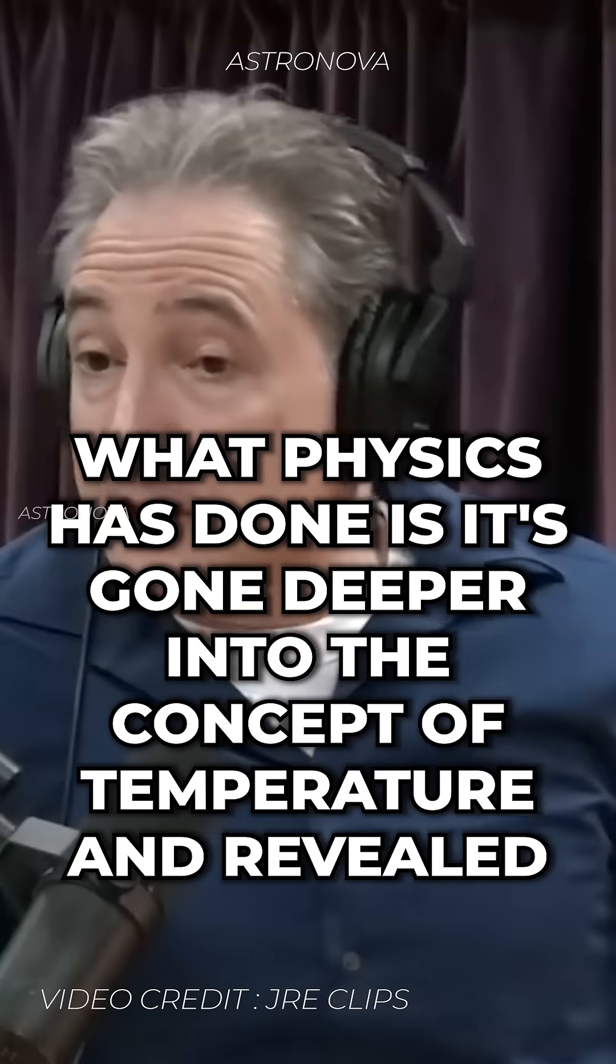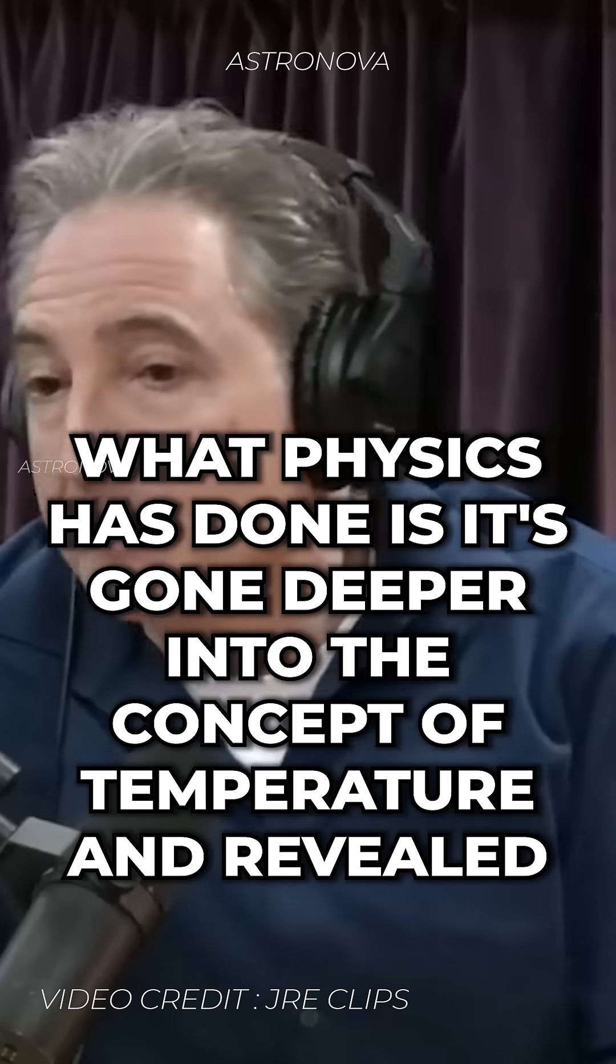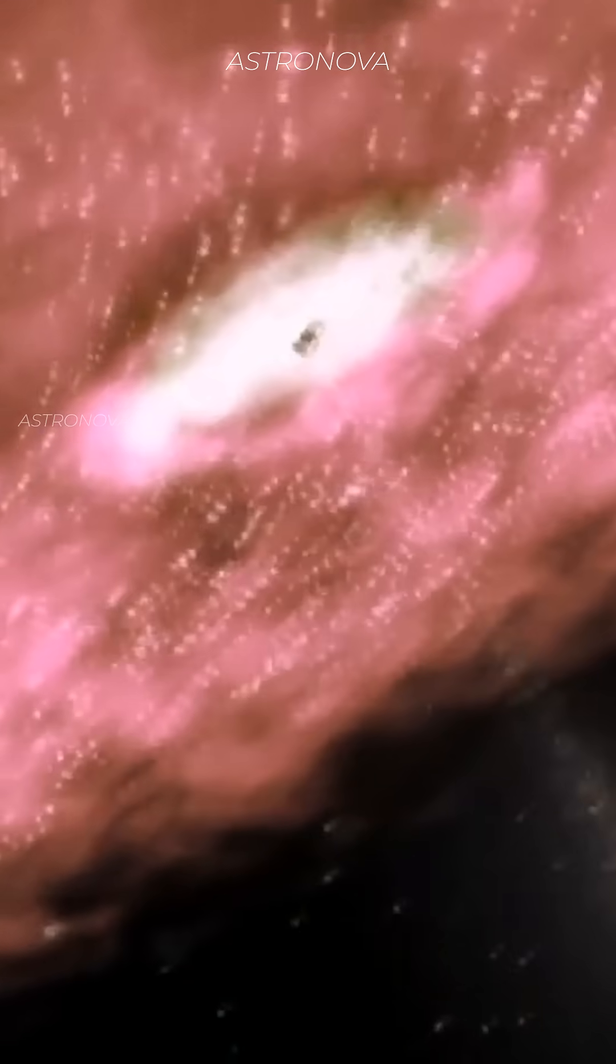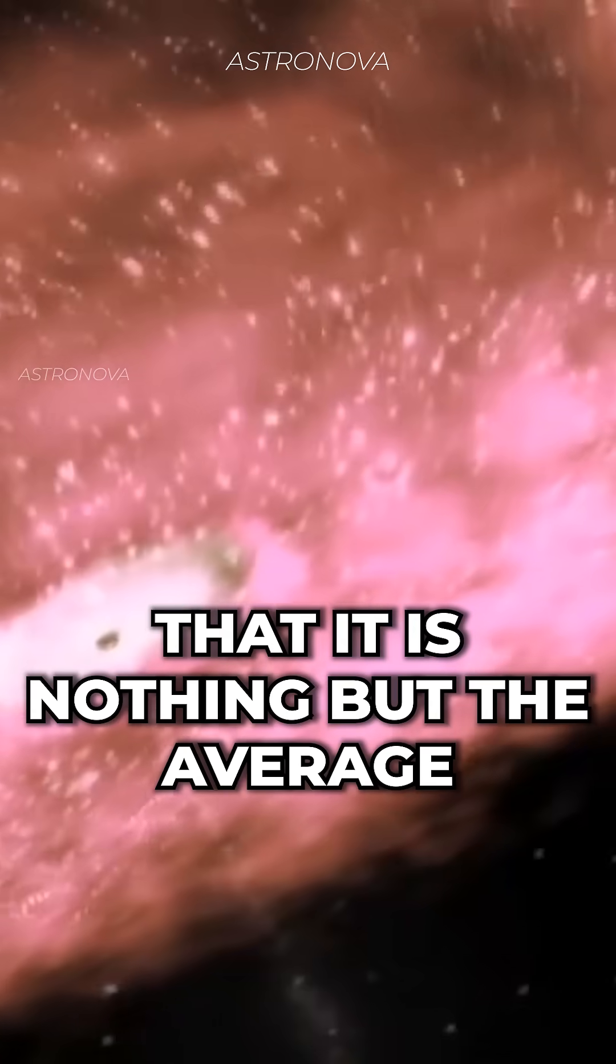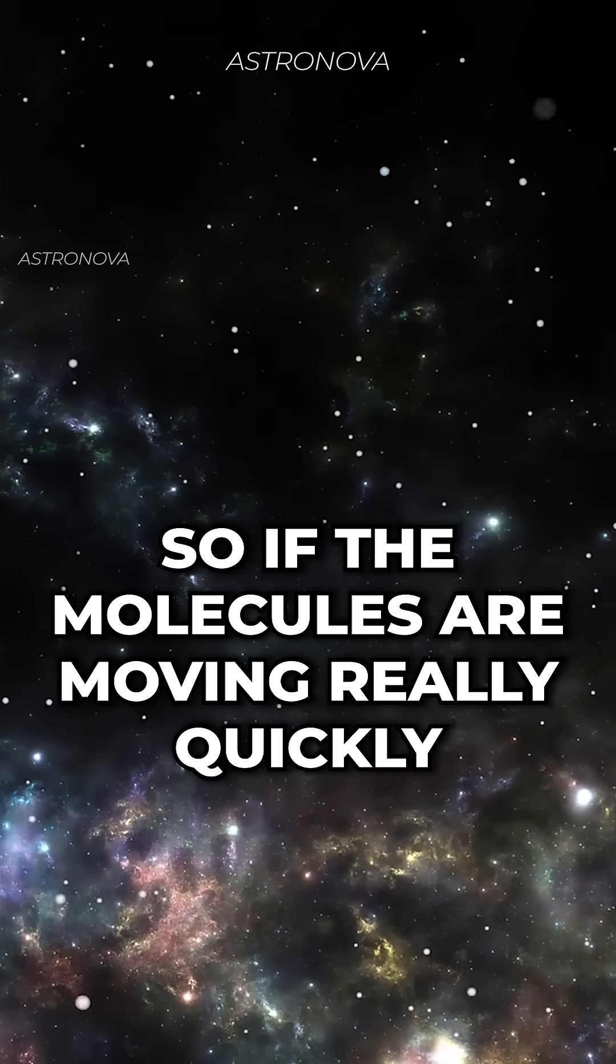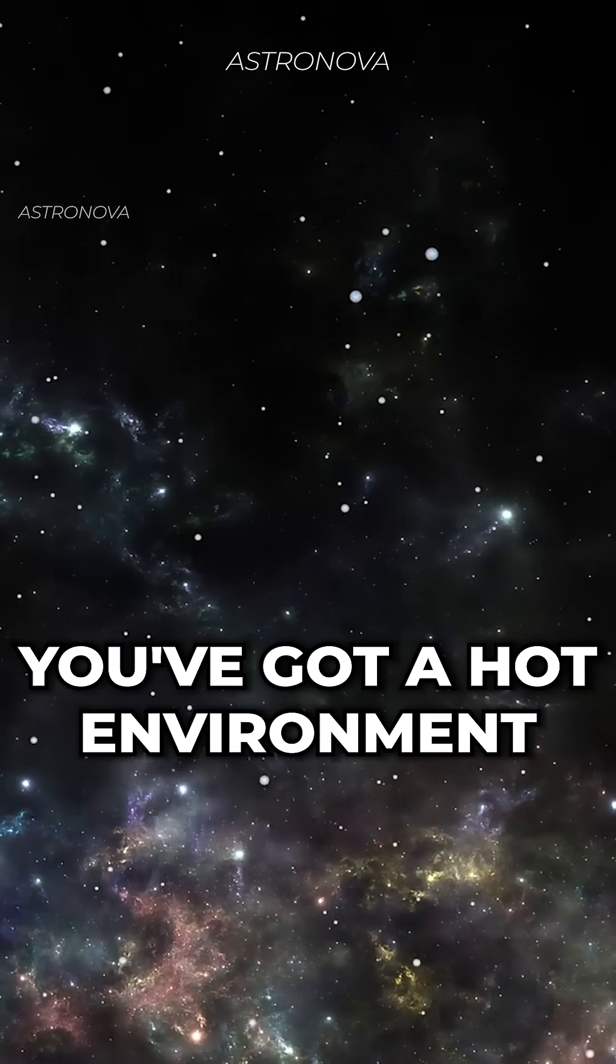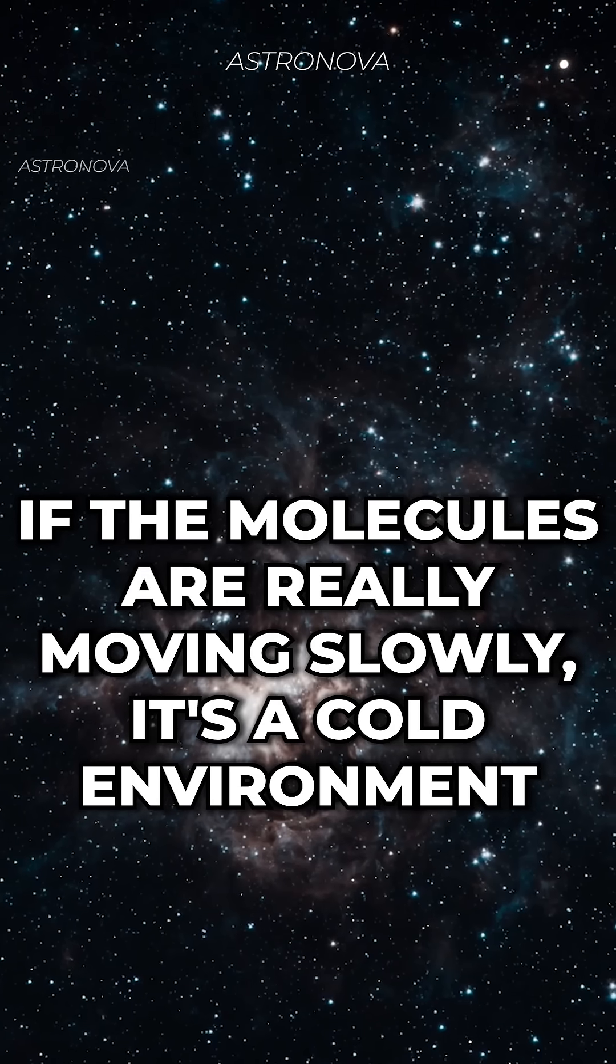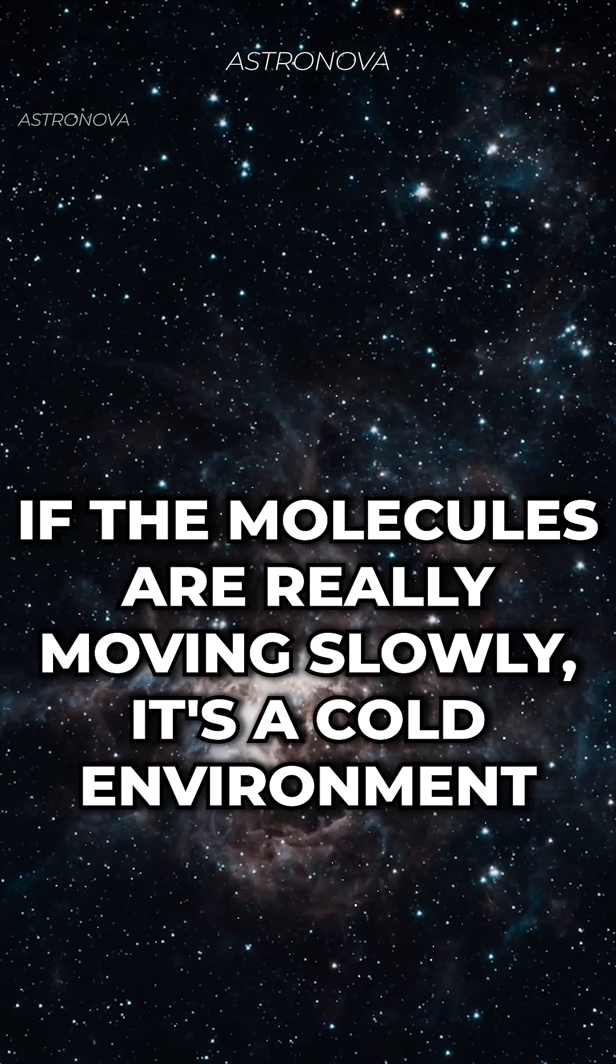What physics has done is it's gone deeper into the concept of temperature and revealed that it is nothing but the average motion of the particles making up the environment. So if the molecules are moving really quickly, you've got a hot environment. If the molecules are moving slowly, it's a cold environment.